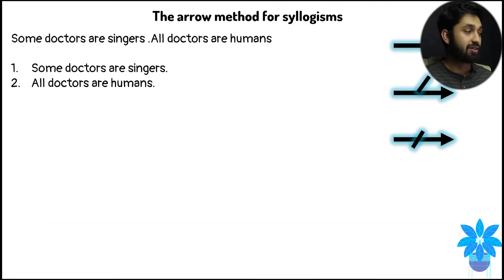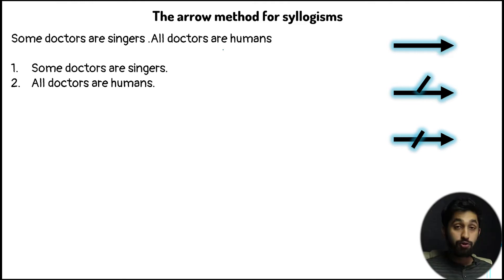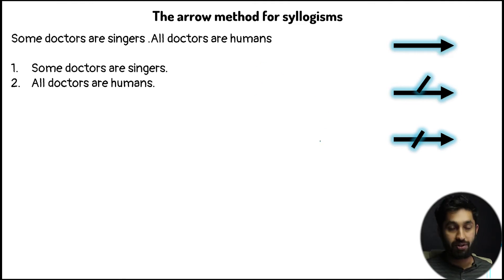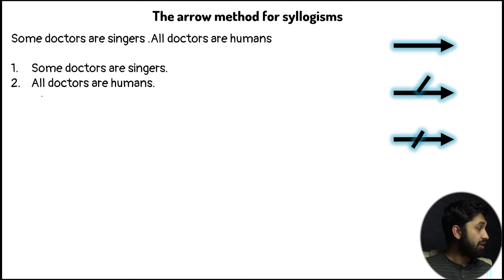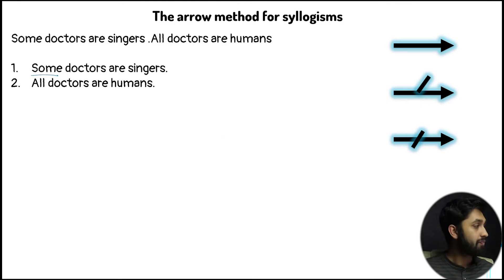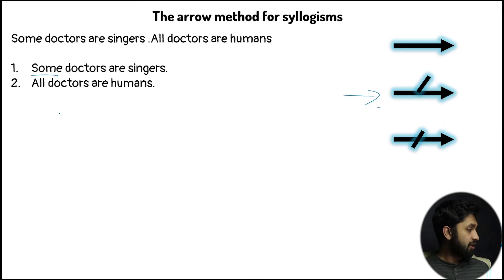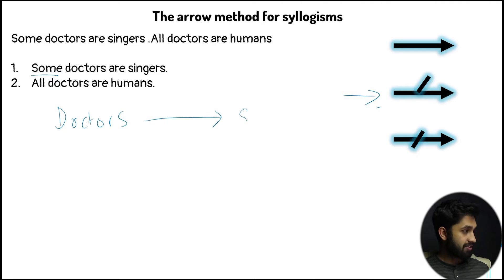So let's put this into practice. How do we represent information into our diagram using these arrows? Step number one: identify the keyword. Here it's 'some', so we draw the 50% arrow. I'm going to write doctors, arrow, and then singers.